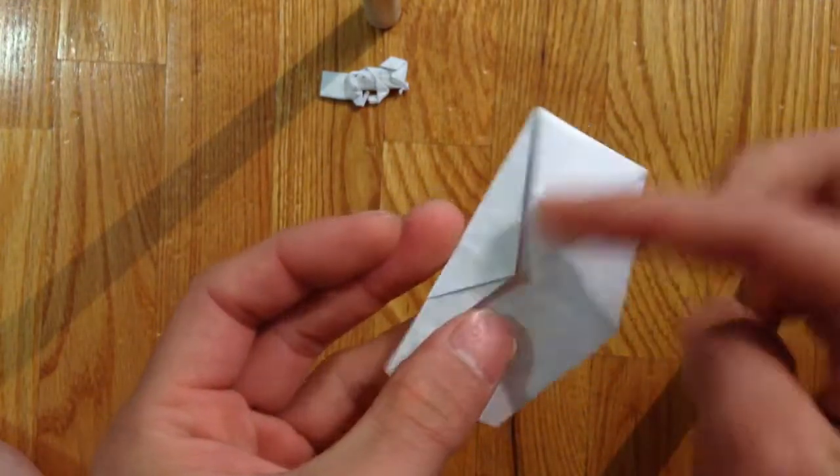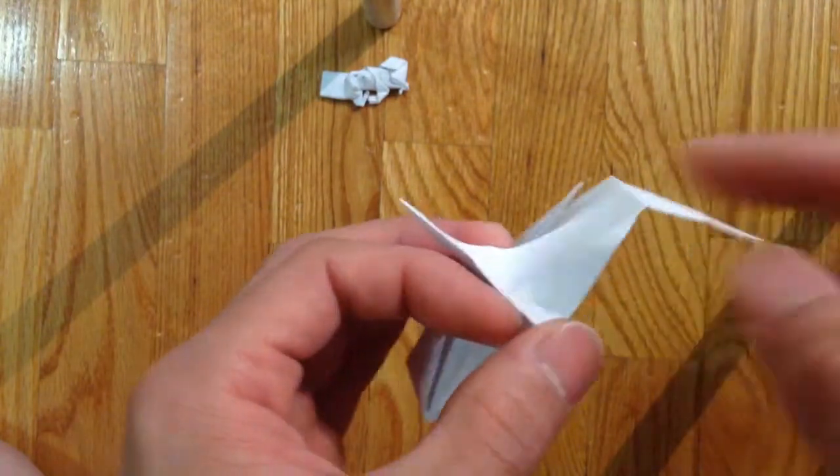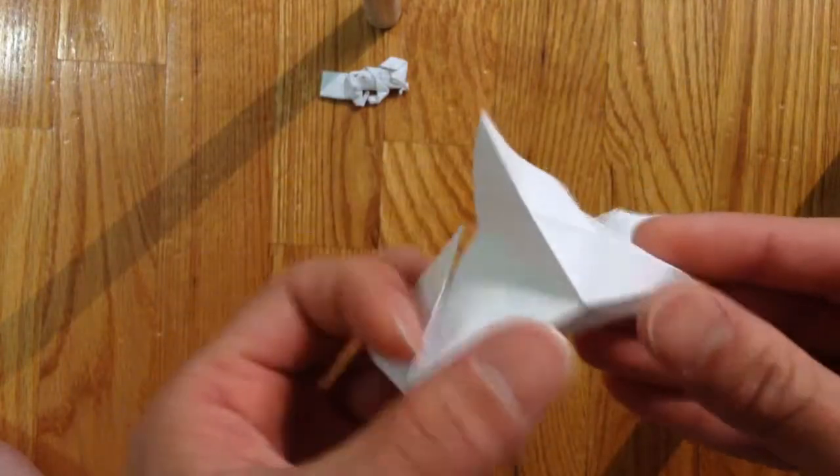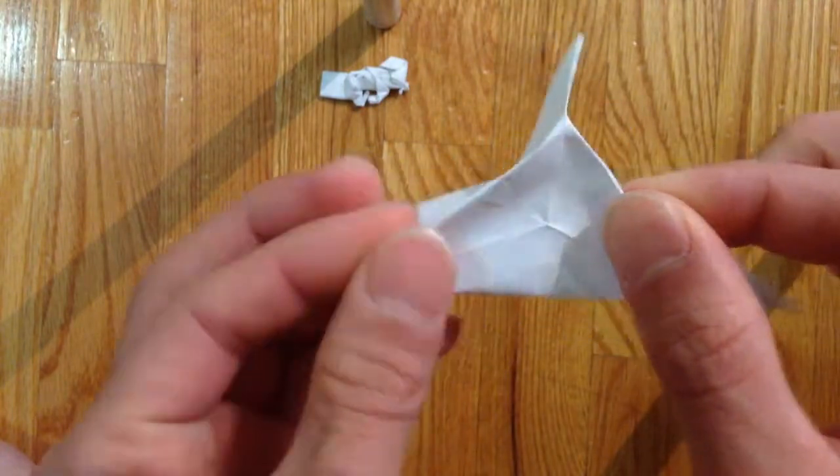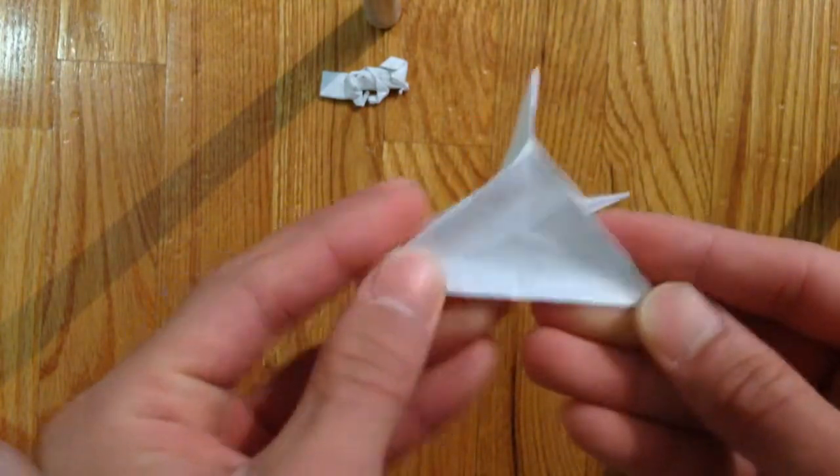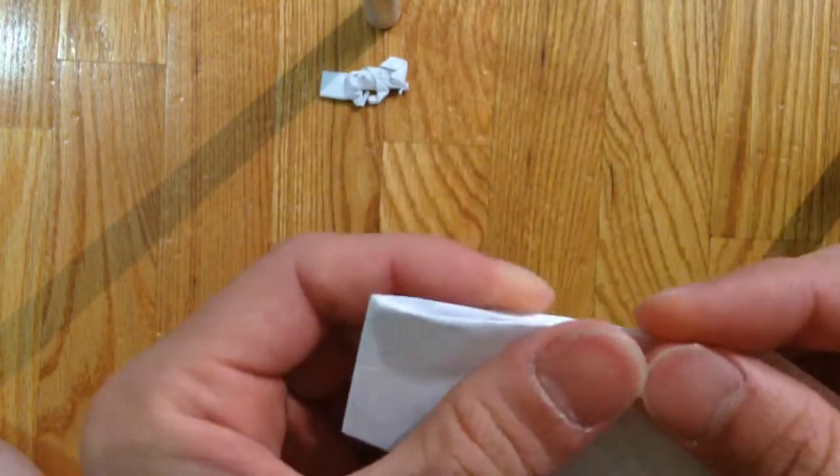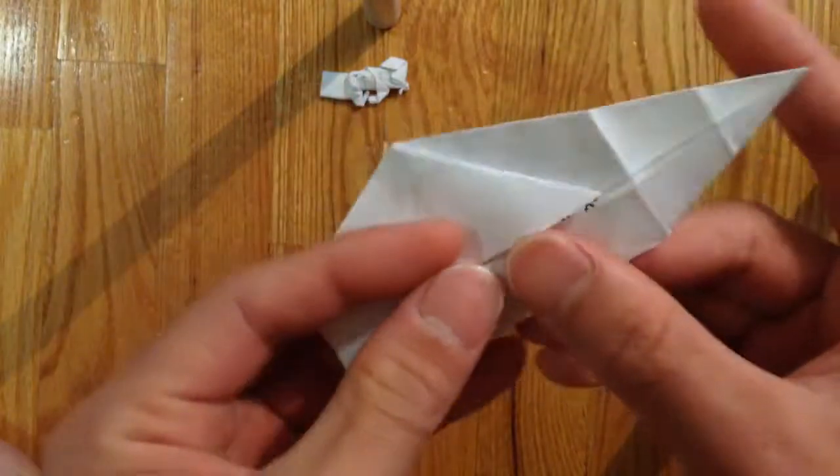Then you got to sink this, so fold on the side inward like so. Then fold down the crease line and sink one side.